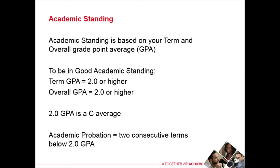Academic standing is based on your term grade point average and your overall grade point average here at Western. To be in good academic standing, you need to have a term GPA of 2.0 or higher and an overall GPA of 2.0 or higher. A 2.0 GPA is a C average.